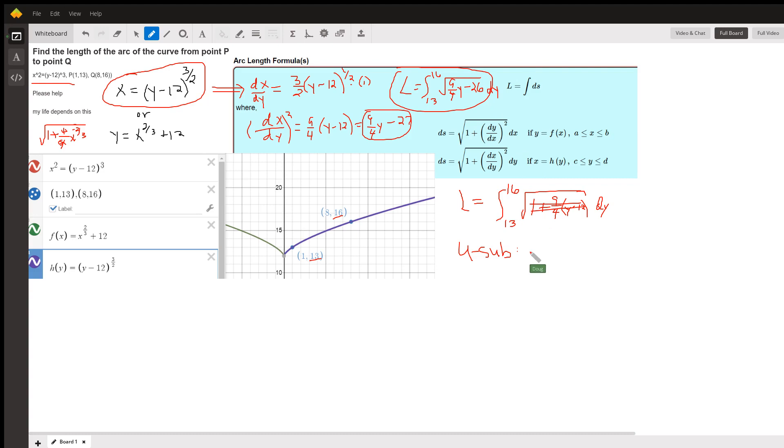And I'm not going to take that to conclusion here. But the idea is that if u equals 9 fourths y minus 26, that du will equal 9 fourths dy. So when we use u substitution, we will put a 9 fourths here and a 4 ninths out front. And it will replace these limits of integration, 13 and 16.